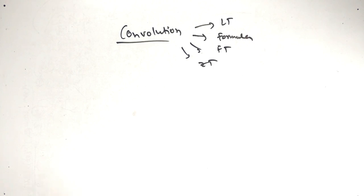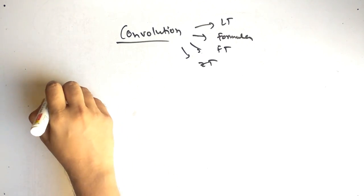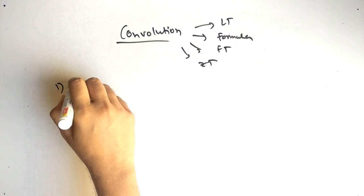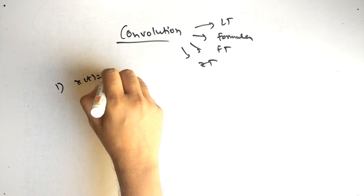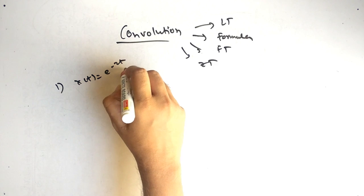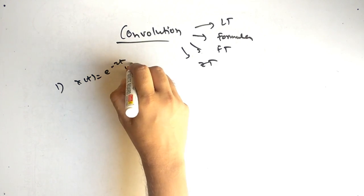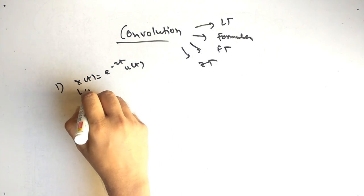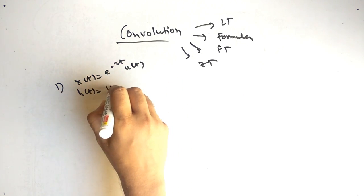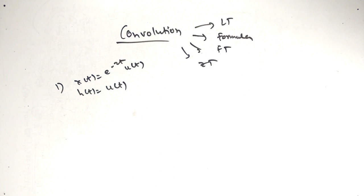So let's see how to solve them. The first question is: we have x of t equal to e raised to minus 2t times u of t, and we have h of t equal to u of t.